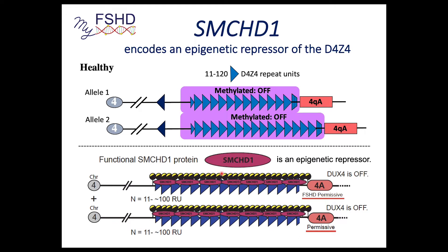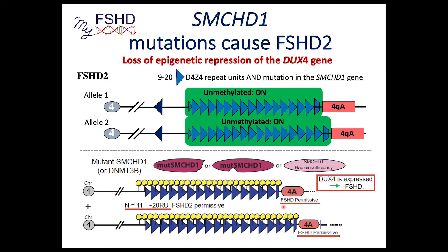SMCHD1 is a regulatory protein — an epigenetic repressor of the D4Z4 region — that is necessary for keeping the DUX4 gene off. In FSHD2, there's a mutation in the SMCHD1 gene. There are literally hundreds of mutations that can cause FSHD2 in this very large gene. You can get a truncated protein, a functionally inactive protein, a dominant negative protein, or a deletion causing haploinsufficiency — meaning you have half as much protein as you need. Ultimately, the region is unmethylated and the DUX4 gene is on.